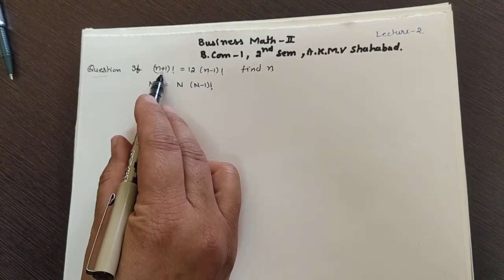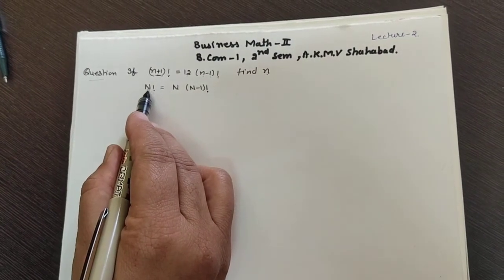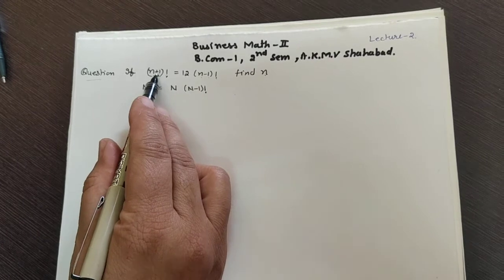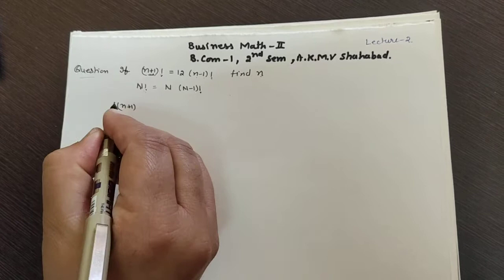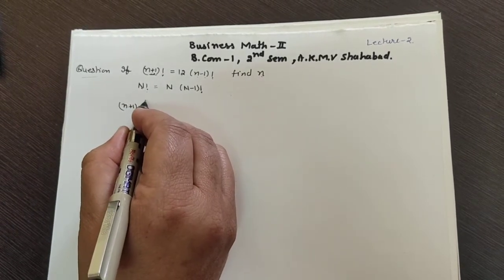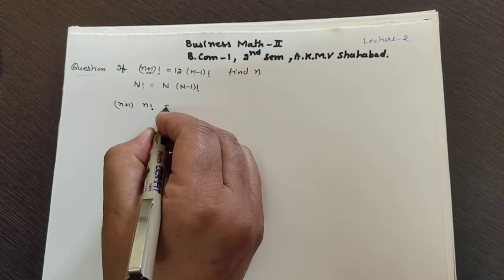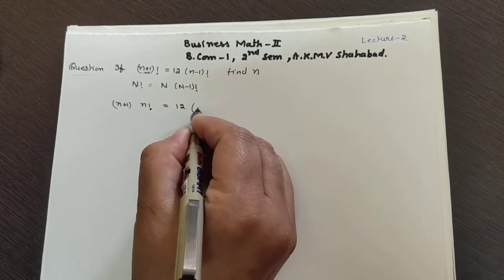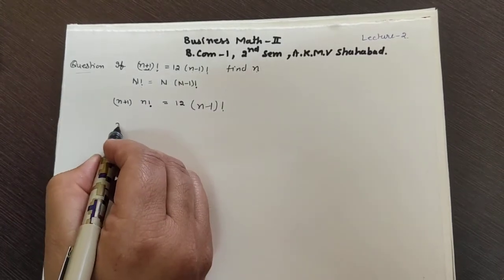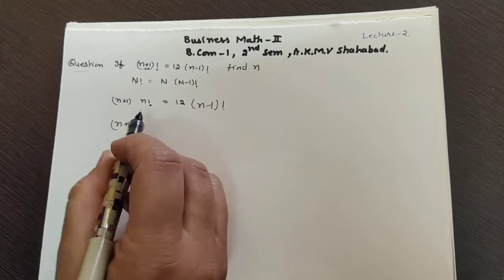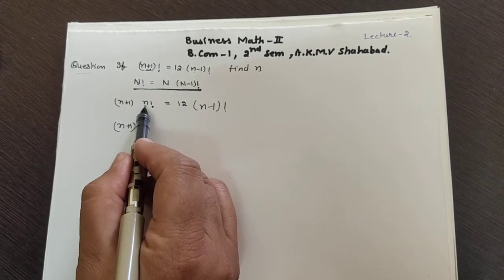For (n+1)!, the capital N value is equal to n+1, so this term is outside: n+1, and one less gives (n+1-1) = n!, so (n+1)! = (n+1)·n!. This equals 12·(n-1)!. Again apply the same formula on the right side.